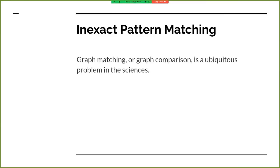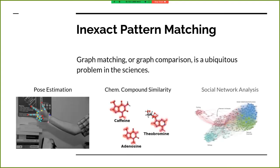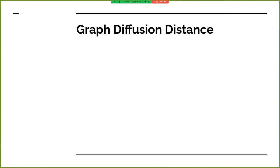Some example datasets we might want to do distance metric learning on are things like pose estimation, chemical compound similarity, or social network analysis. Graph diffusion distance is one tool we can use to do this.